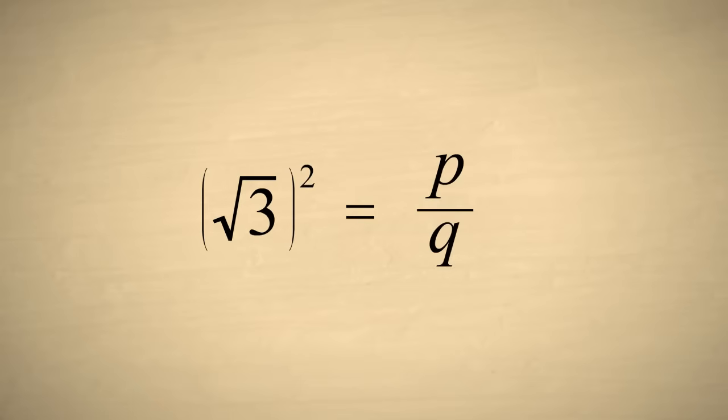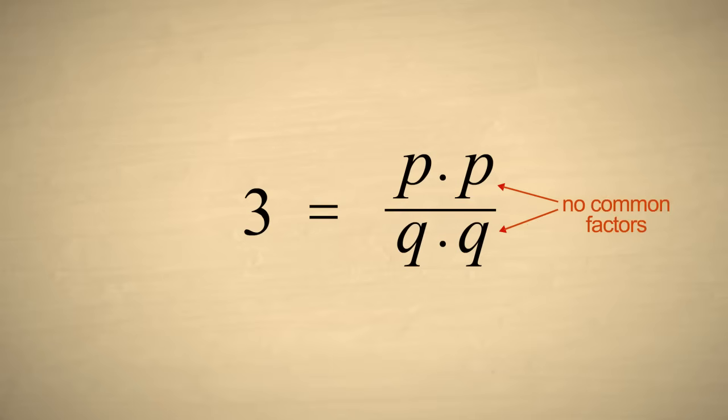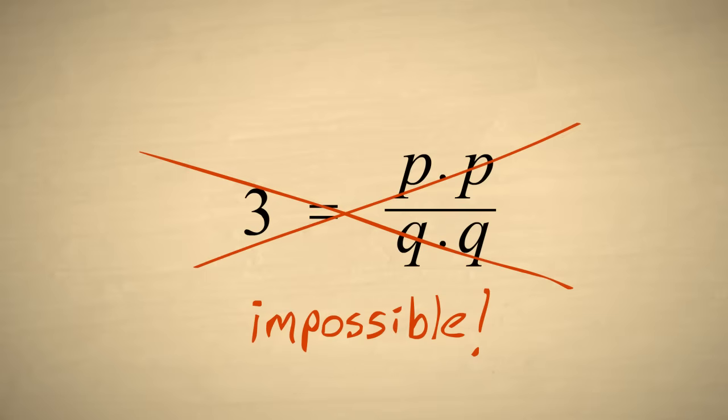Squaring both sides, we get three equal to p times p over q times q, and since p and q have no common factors, this fraction can't be reduced to the integer three. Therefore, the square root of three is irrational.